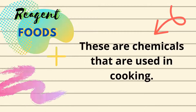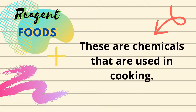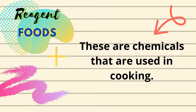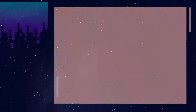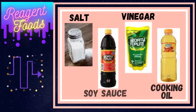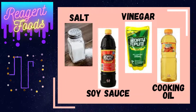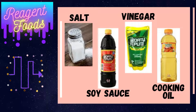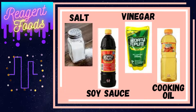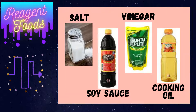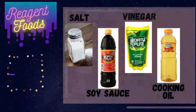Now, let's proceed to Regent Food. These are chemicals that are used in cooking. Examples of Regent Foods are Salt, Soy Sauce, Vinegar, and Cooking Oil.